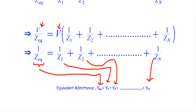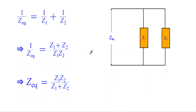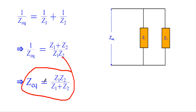There is a special case when two impedances are connected in parallel. Starting from 1 / Z equivalent = 1 / Z1 + 1 / Z2, taking the LCM gives 1 / Z equivalent = (Z1 + Z2) / (Z1 · Z2). Taking the reciprocal gives Z equivalent = (Z1 · Z2) / (Z1 + Z2). Whenever two impedances are connected in parallel, use this product-over-sum formula to reduce them to a single equivalent impedance.